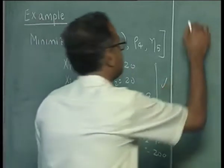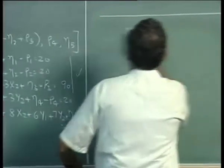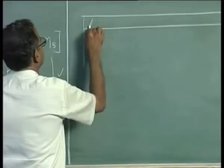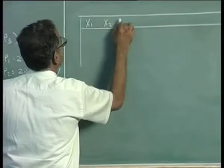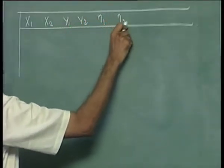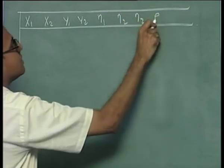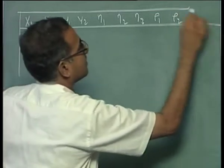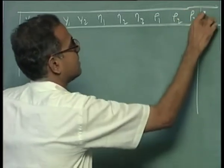We can set up the simplex table like this, which will have x1, x2, y1, y2, eta1, eta2, eta3, rho1, rho2, rho3 and right hand side.